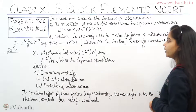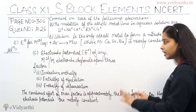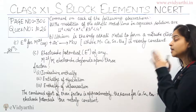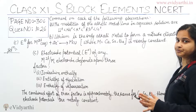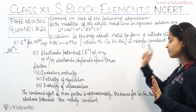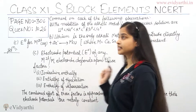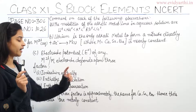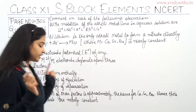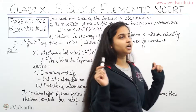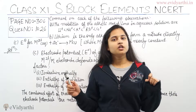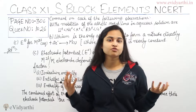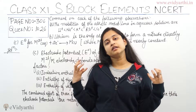To summarize: electrode potential depends on ionization enthalpy, enthalpy of hydration, and enthalpy of vaporization. The combined effect of these three factors is approximately the same for calcium, strontium, and barium. Hence, their electrode potentials are nearly constant. This explains why the standard electrode potential for Ca, Sr, and Ba is nearly constant.